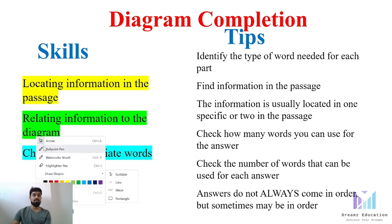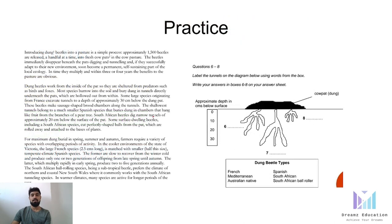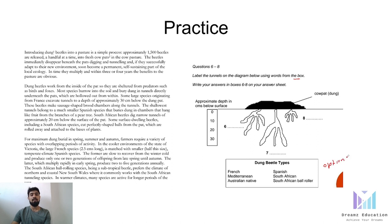The first major task is to locate the information in the passage. Whenever you get this type of question, the first thing you have to do is check the diagram and understand whatever information is already given in the diagram. So, question 6 to 8: label the tunnels on the diagram below using words from the box. That means in this case we have the options.